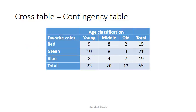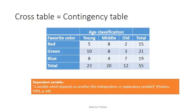When constructing a cross table like this, it's important to think about which variable will go into the columns and which one will go into the rows. One way of deciding on this is whether you have an independent and dependent variable. A dependent variable is a variable that depends on another. Could it be that age depends on your favorite color? Well, that's very unlikely. The other way around, your favorite color might depend on your age. Therefore, in this case, favorite color is the dependent variable and age is the independent variable.